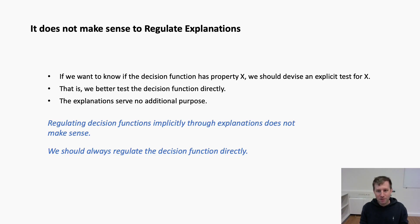In summary, while algorithmic explanations might seem objective, they do in fact depend on many human choices, such as the composition of the dataset, the trained machine learning algorithm, and the choice of a particular explanation algorithm. For these reasons, we argue that it does not make sense to regulate machine learning systems implicitly via their explanations. Instead, we should test and regulate decision functions directly. Moreover, in critical applications where manipulation concerns are high, the only solution might be to demand the usage of an a priori interpretable classifier. This idea is, however, not part of the current draft of the Artificial Intelligence Act.